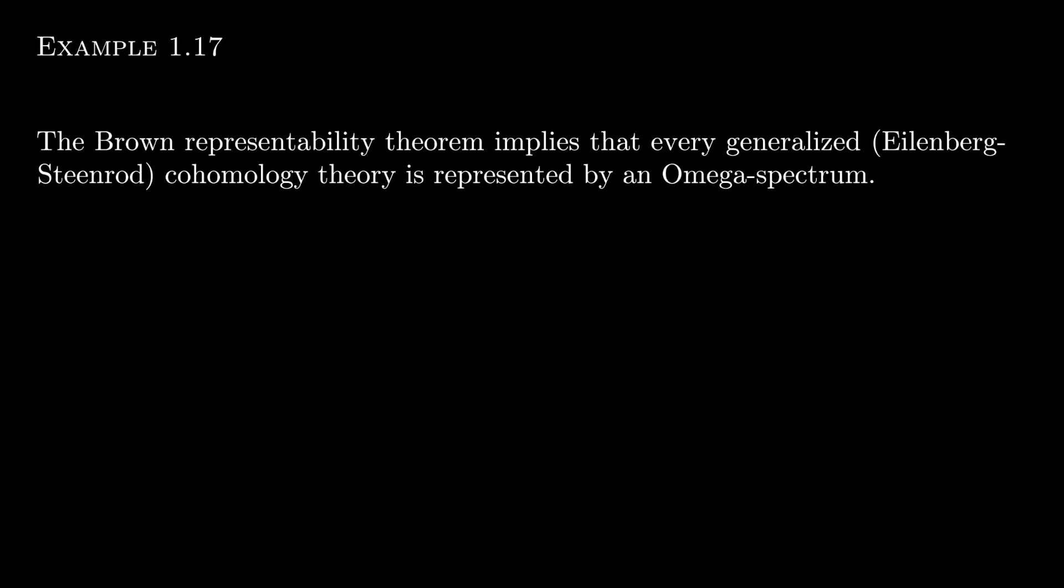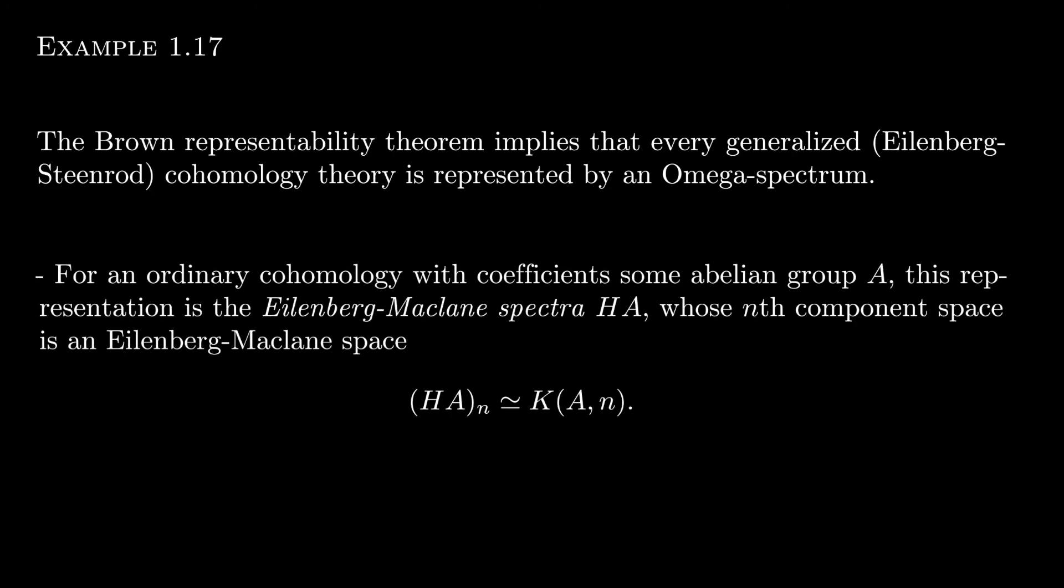So even though we don't really know yet what it means to be represented, we can sense a deep relationship between omega spectra and generalized cohomology theories. For example, if we have an ordinary cohomology with coefficients in some abelian group A, then the omega spectrum that the Brown representability theorem spits out has component spaces that are Eilenberg-MacLane spaces.